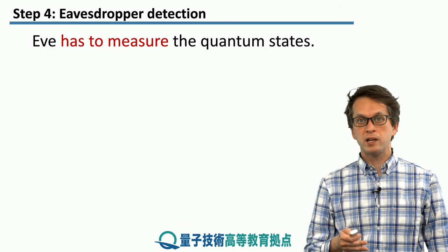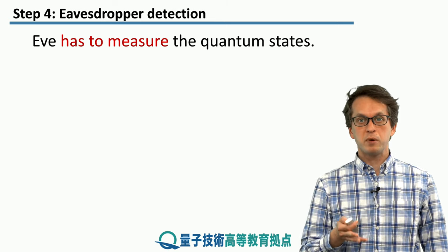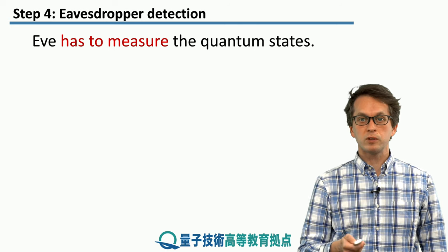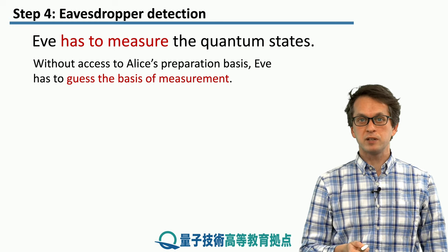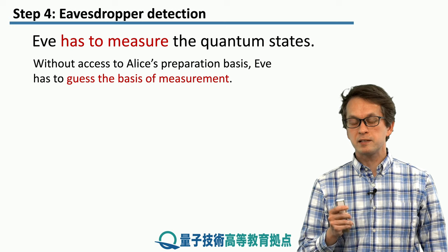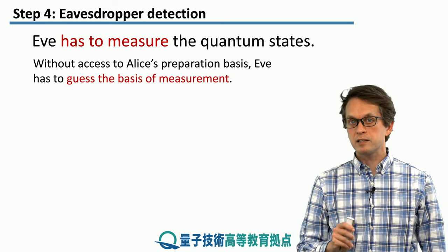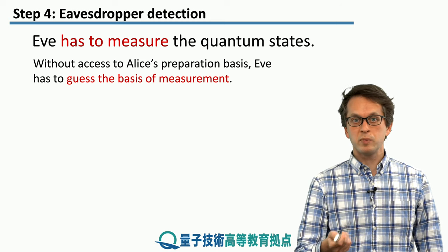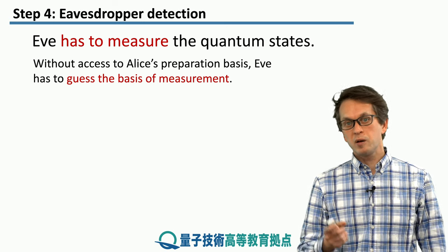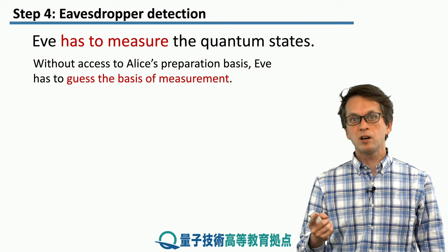In order for Eve to gain any access to the information that Alice is trying to share with Bob, she has to measure these qubits. So what can happen then? She has to guess the basis of measurement, because remember, the preparation basis stored in the bit string B is still kept secret by Alice. That has not been communicated over a public classical channel to Bob. Therefore Eve does not have access to this information. In order to measure these qubits, she just has to pick a random basis — and she knows the two choices are either z or x.